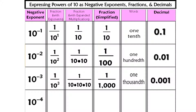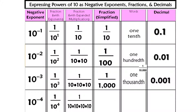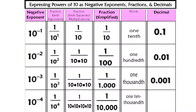Last one. 10 to the negative fourth power is 1 over 10 to the positive fourth power, which is 1 over 10 times 10 times 10 times 10, which is 1 over 10,000, which is one ten-thousandth, which is 0.0001.